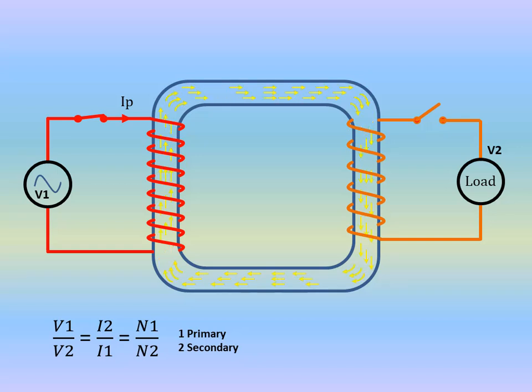The magnetic flux created by this current is called the main flux, which links to the secondary winding through the core and induces a voltage E2 in the secondary winding. Because this flux also links to the primary winding, a back electromotive force E1 is generated in the primary winding. According to Lenz's law, this back EMF opposes the direction of the applied voltage.